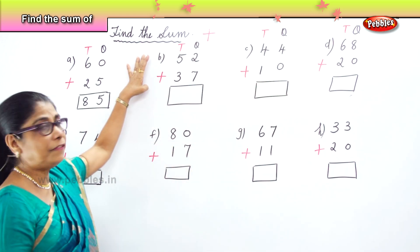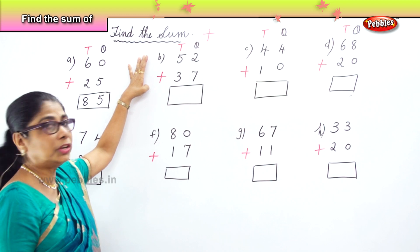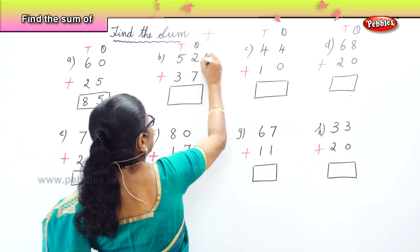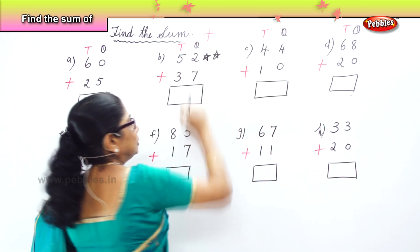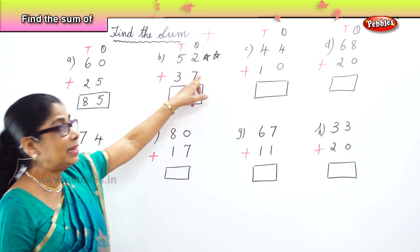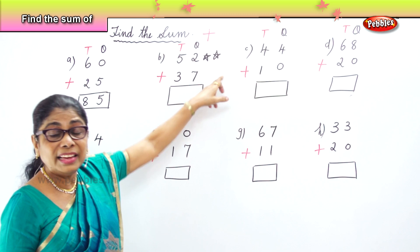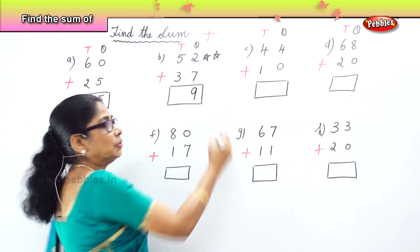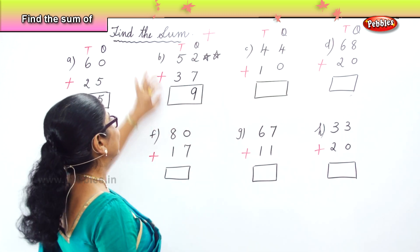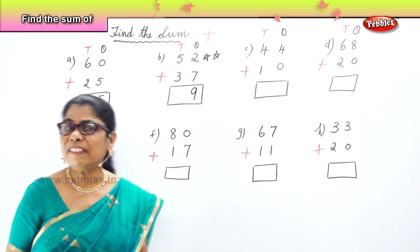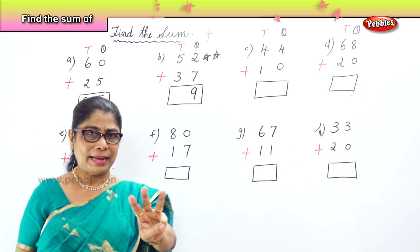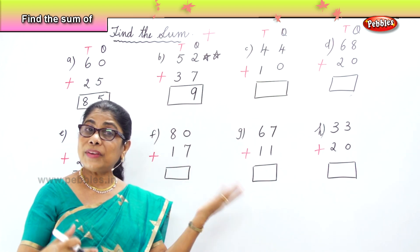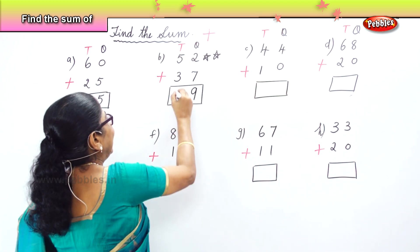Now find the sum of 52 and 37. You have 52 and 37 here. What is 7 plus 2? 7 ones plus 2 ones — 7, 8, 9. 7 plus 2 is 9. Very good. So 7 ones plus 2 ones is 9. Excellent. Now we look at the tens place. We have 5 tens and 3 tens. 5 plus 3 — what is 5 tens plus 3 tens? 8 tens. Good.